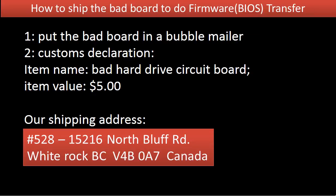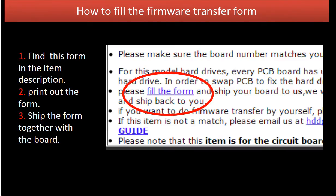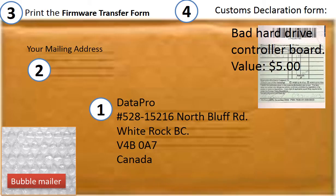How to ship the bad board to do the circuit board firmware transfer: put the bad board in a bubble mailer. For customs declaration, the item name is 'bad hard drive circuit board' and the item value is $5. You need to fill out a circuit board firmware transfer form, which can be found in the item description. Please print out and fill the form and ship it together with the board. Print our shipping address on the envelope, along with the client's return shipping address.